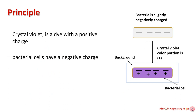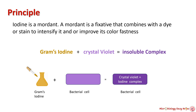During the gram staining procedure, bacteria are first stained with crystal violet, which is a dye with a positive charge. Bacterial cells have a negative charge, and as opposite charges attract, crystal violet enters into the cell wall of the bacteria. In the next step, the cell is treated with iodine. Iodine is a mordant — a fixative that combines with a dye or stain to intensify it or improve its color fastness. Iodine forms an insoluble complex with crystal violet, which helps in dye retention.